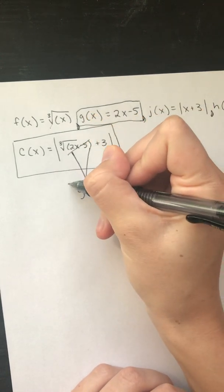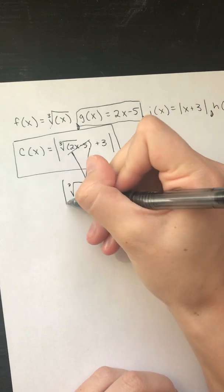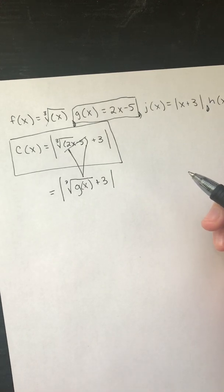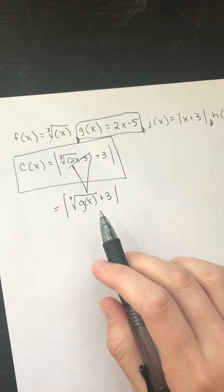And so that kind of disappears and it turns into g of x. And we're gonna keep it inside that third root like they had it before. Plus 3. Okay, so we've simplified one of them out which is nice because it makes it cleaner.